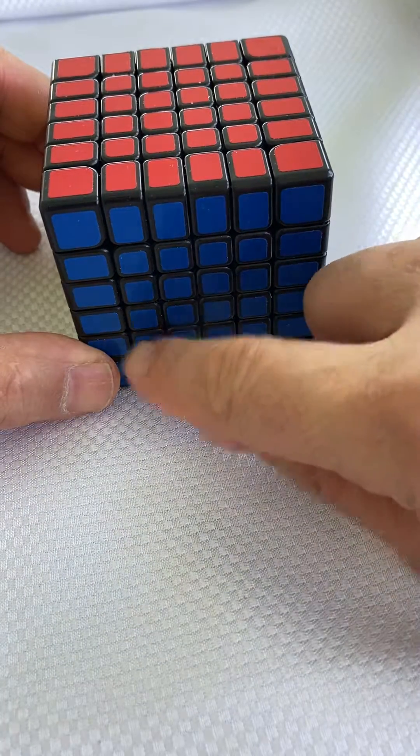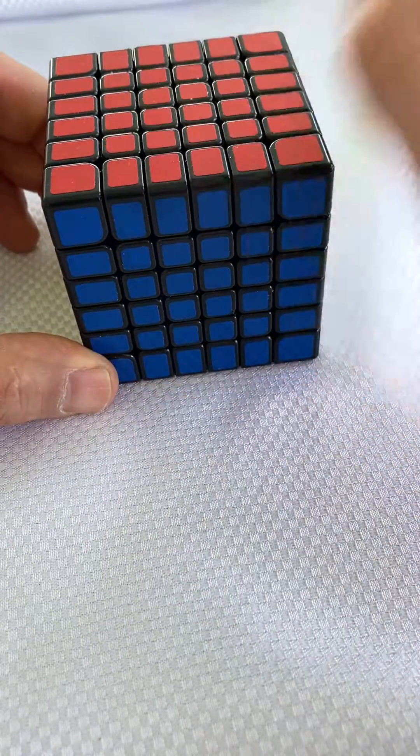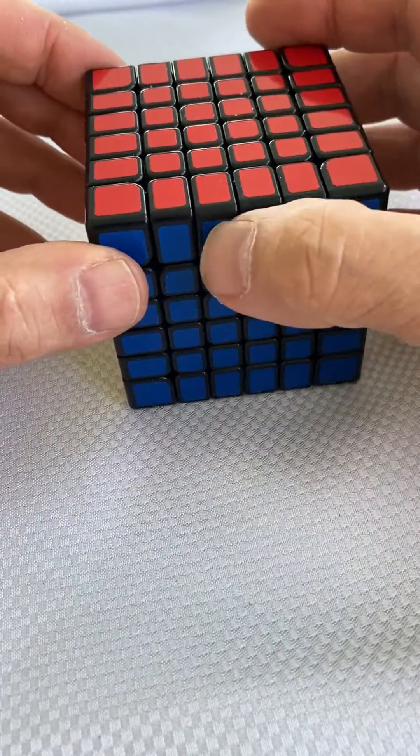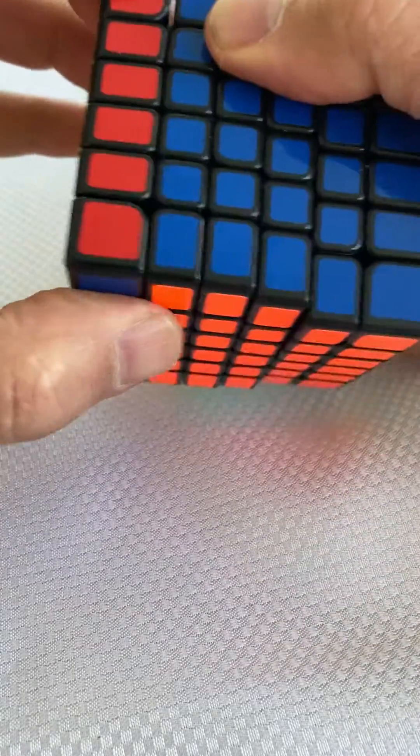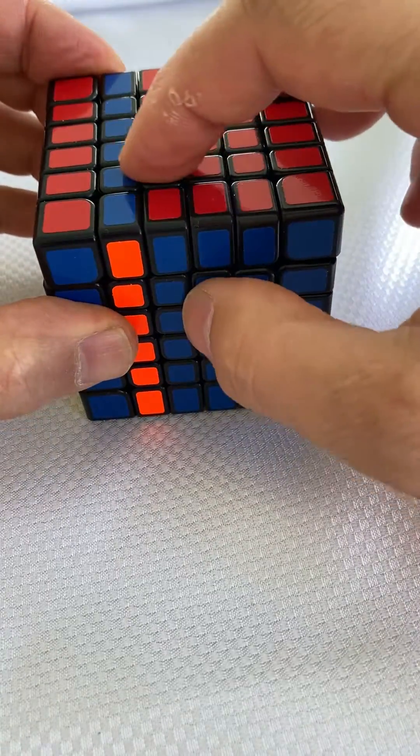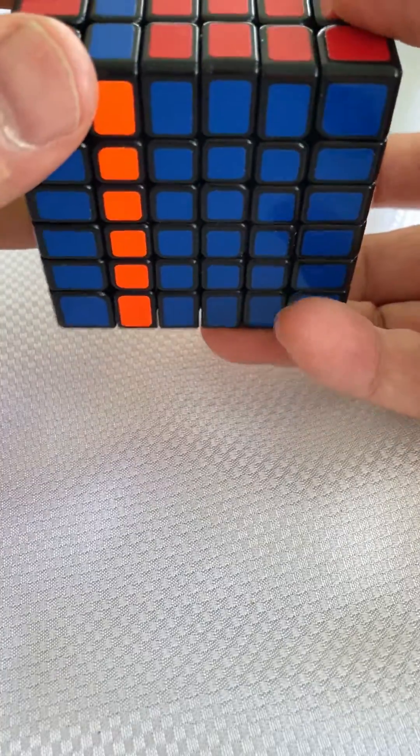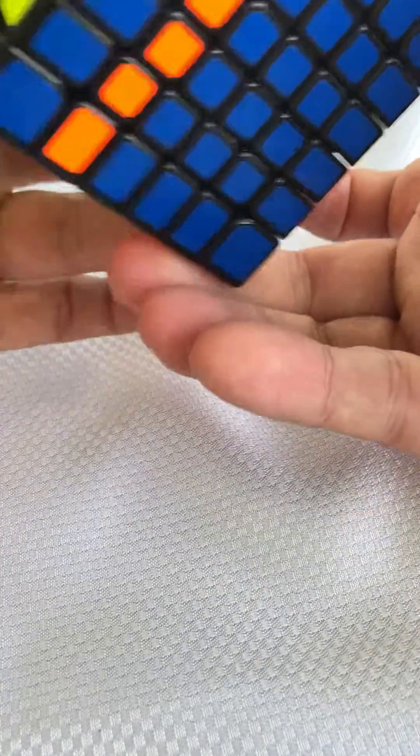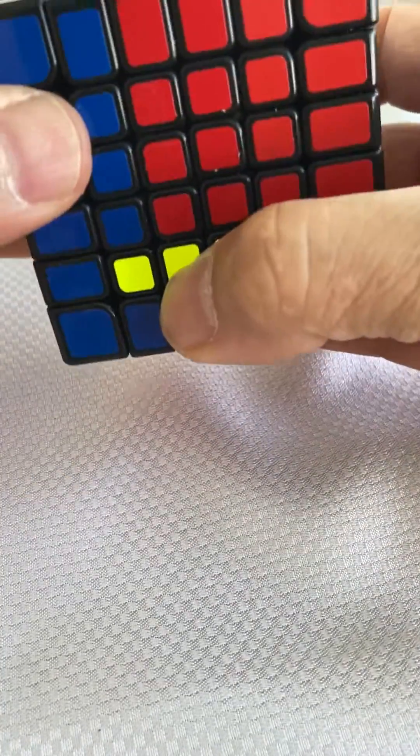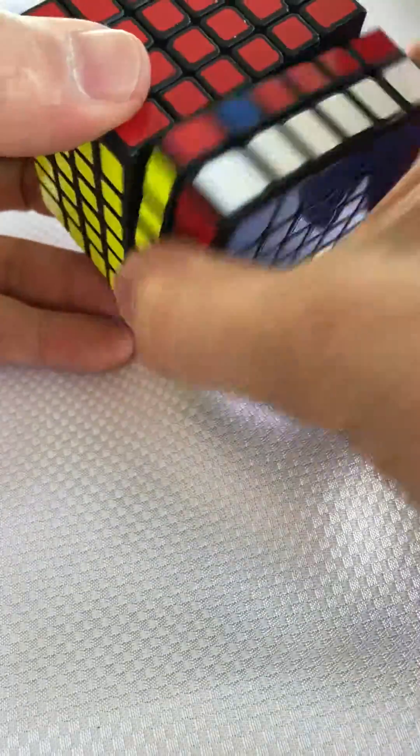So I'm going to just swap, let's say, this blue here and this red. So to do that, I'm just going to bring that slice up. This is the one I want to keep here, right? And then I'm going to just move it over to the side for a second, move it down, and then move that one back.